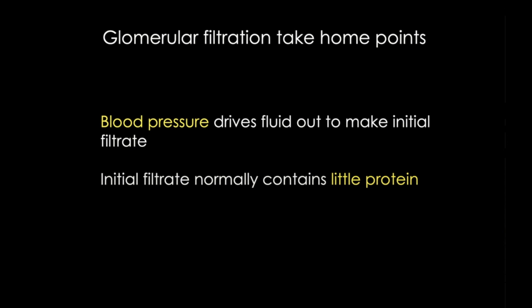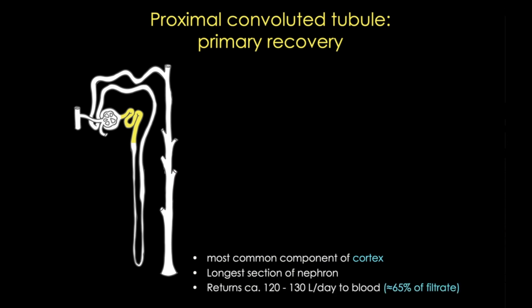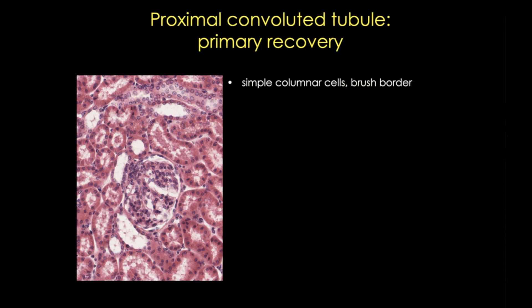Now we're going to travel with the filtrate to the next part of the nephron, the proximal tubule. This part of the tubule resides primarily in the cortex and has a major role in returning fluid to the blood, recovering up to 65% of the filtrate. In sections of cortex, you can see proximal convoluted tubules adjacent to each renal corpuscle. These tubules have a very characteristic look: they consist of simple columnar cells that form a brush border. Compared to other tubules, you can see very few nuclei in a proximal convoluted tubule section, and the lumen appears fuzzy — what I call full of cotton candy — due to the very long microvilli that form the brush border.